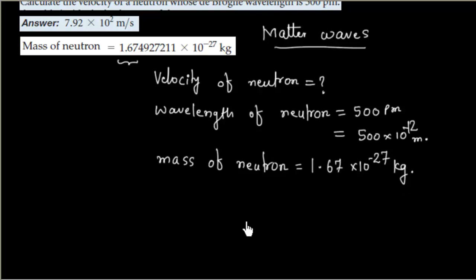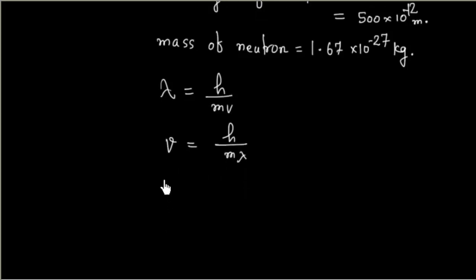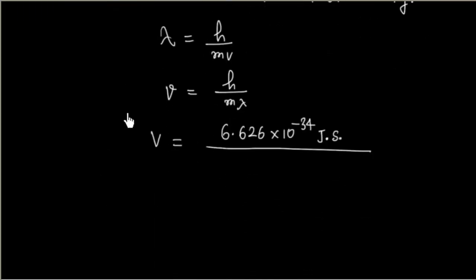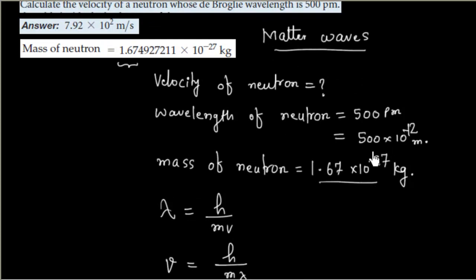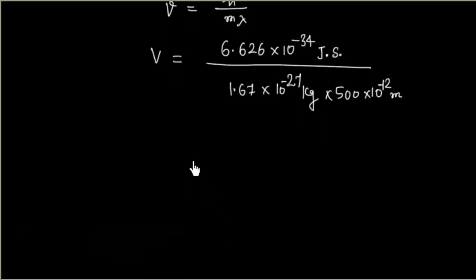We can apply the de Broglie formula, λ = h/mv. If I slightly modify this formula, we can write v = h/(m × λ). Now h is Planck's constant, with value 6.626 × 10⁻³⁴ Joule·second, divided by mass 1.67 × 10⁻²⁷ kg, multiplied by λ = 500 × 10⁻¹² meter. Since everything is in SI units, velocity will come in SI units, i.e., meter per second.